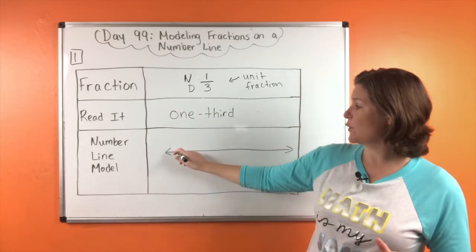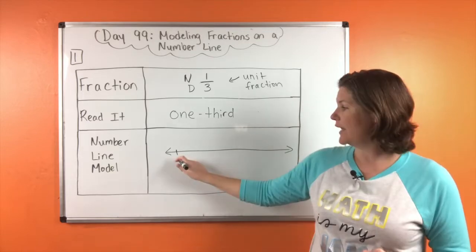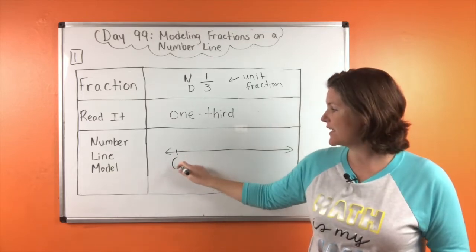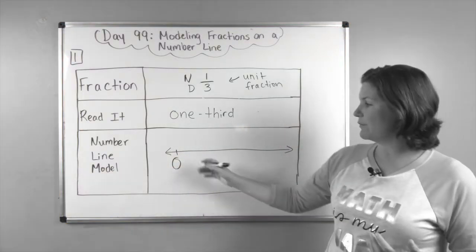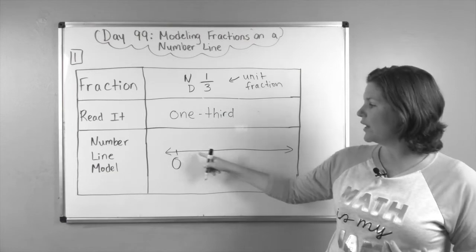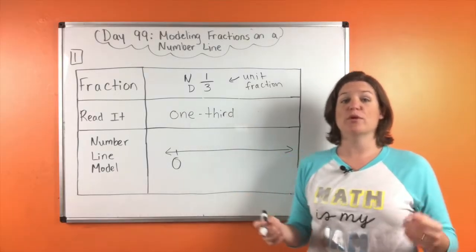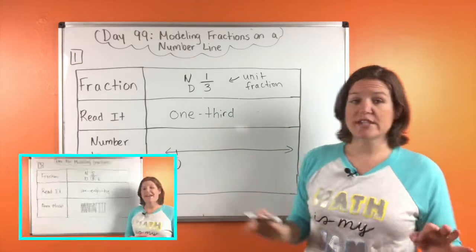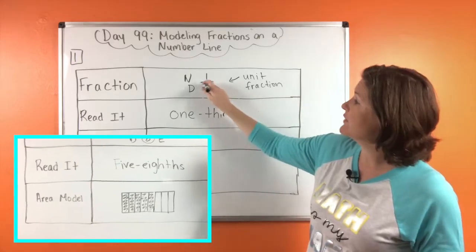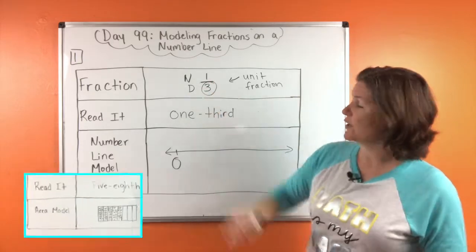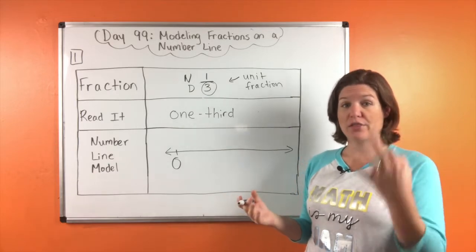Here's what you're going to do. We're going to start with a line going down right there and I want you to place a 0 — this is our starting point. Now you've seen a number line before where it's like 1, 2, 3, but this time we're going to label where those fractions are. Just like when we drew our area models, we looked at the denominator first. What is the denominator? It's 3.